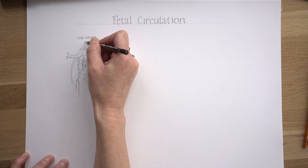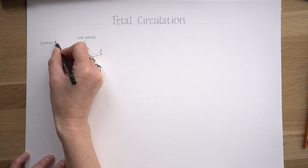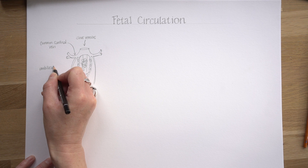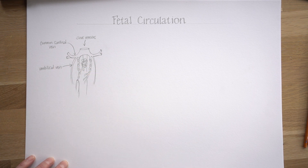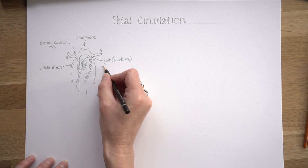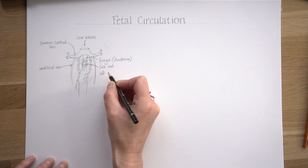Most laterally we have a pair of veins — the anterior and posterior cardinal veins — which join together to make the common cardinal vein. Then there's the umbilical vein, which is bringing blood from the placenta. We also have vitelline veins, and these vitelline veins are draining blood from the yolk sac but also from the gut tube.